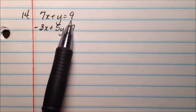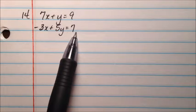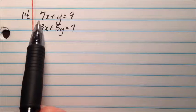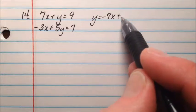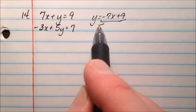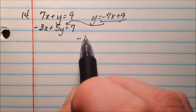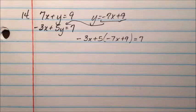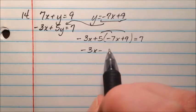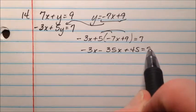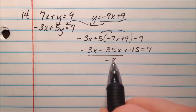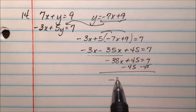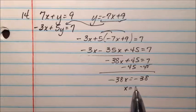On number 14 we have 7x plus y equals 9, and negative 3x plus 5y equals 7. In the first equation, y is almost solved for, so we subtract 7x from both sides to get y equals negative 7x plus 9. We then plug that into the second equation: negative 3x plus 5 times the quantity negative 7x plus 9 equals 7. The distributive property gives us negative 3x minus 35x plus 45 equals 7, so negative 38x plus 45 equals 7.